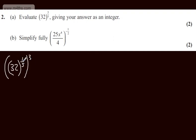32 to the power of 1 fifth, or the fifth root of 32, will give me 2. We need to cube our answer. 2 cubed or 2 to the power of 3 is going to give us 8. So two marks in total for part A.